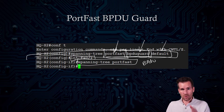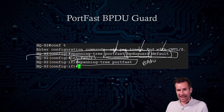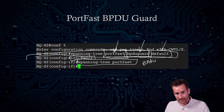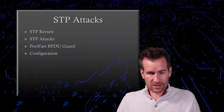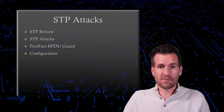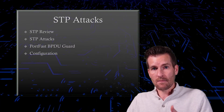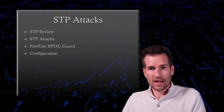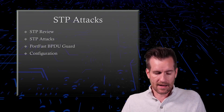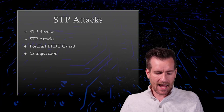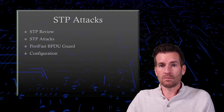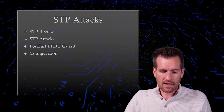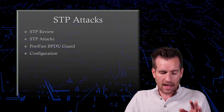If an attacker connects to that port and tries to send out BPDUs to make itself the root bridge, it's going to get blocked. In this video, we did a quick STP review, talked about an STP attack and how it uses BPDUs to try to become the root bridge of the network. Then we talked about PortFast and how turning on PortFast with BPDU Guard blocks that port from receiving BPDUs, eliminating this STP attack from being problematic at all.